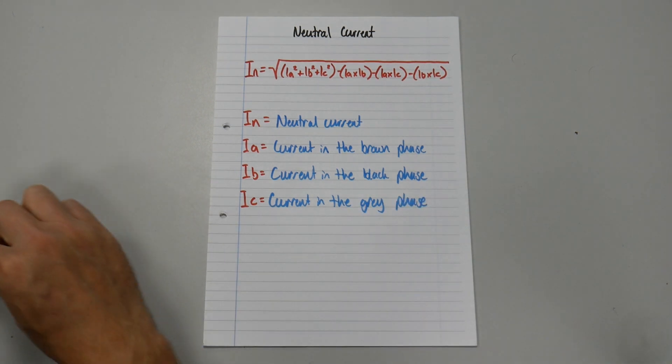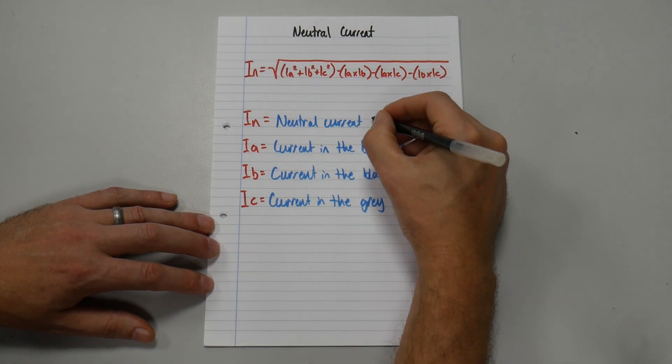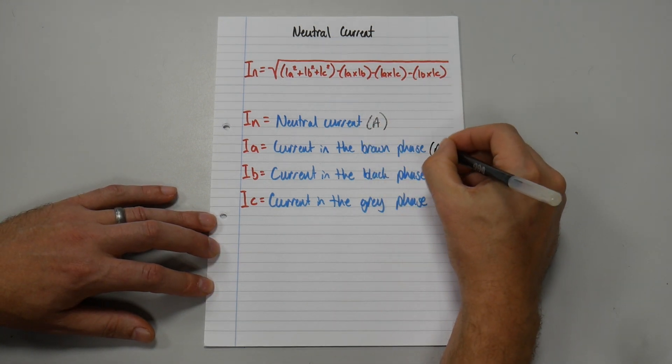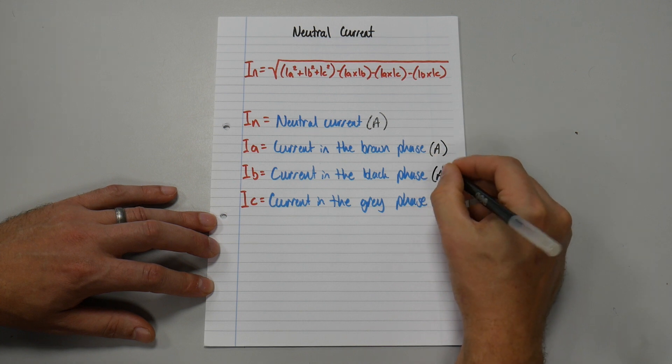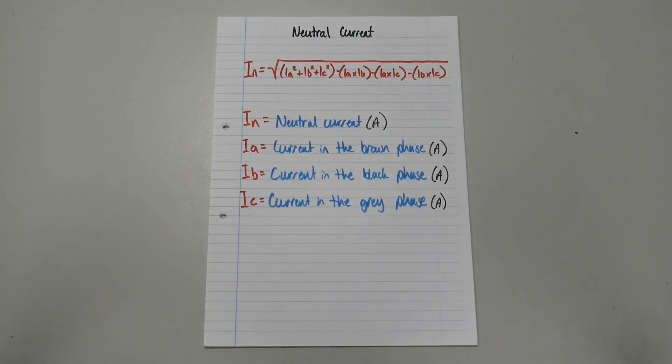Amps. And then we can just write down the SI unit for all of these, well it's all current. So, amps, amps, amps, amps, and amps. And that is the formula for working out current in your neutral conductor on a star system.